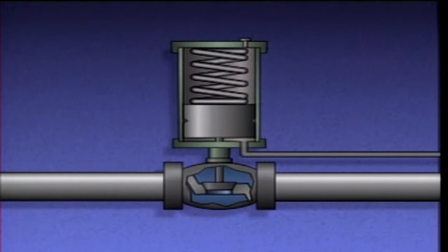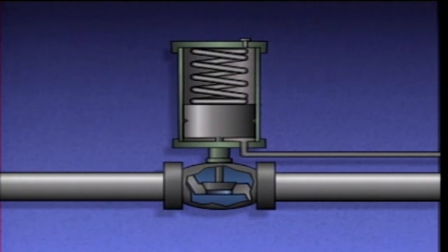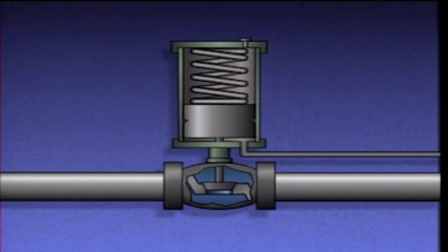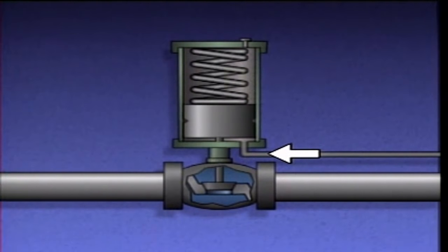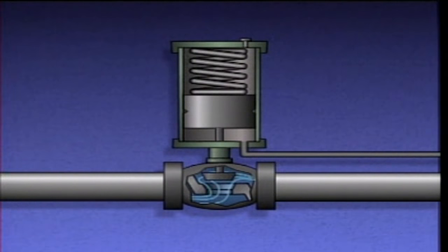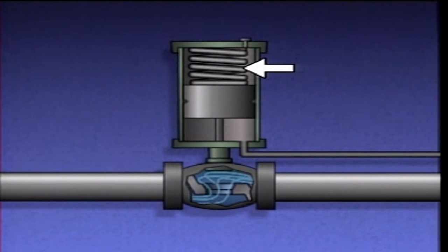A single-acting piston actuator has a controller or similar device that controls the air pressure on one side of a piston. When air is fed through the air supply port, the piston moves along in a cylinder, compressing a spring and opening the valve.